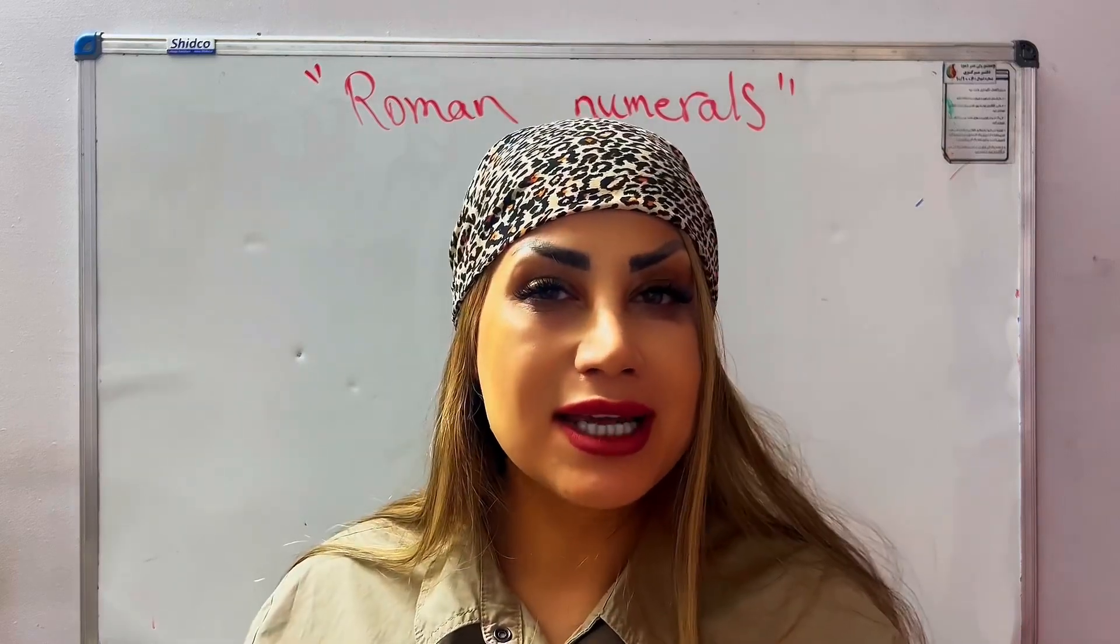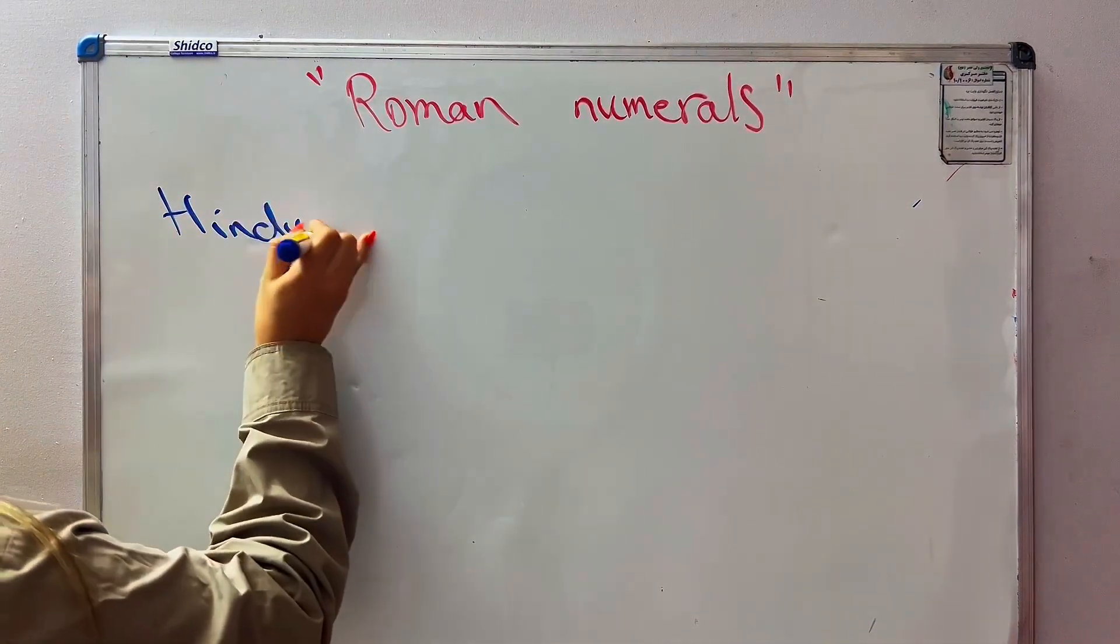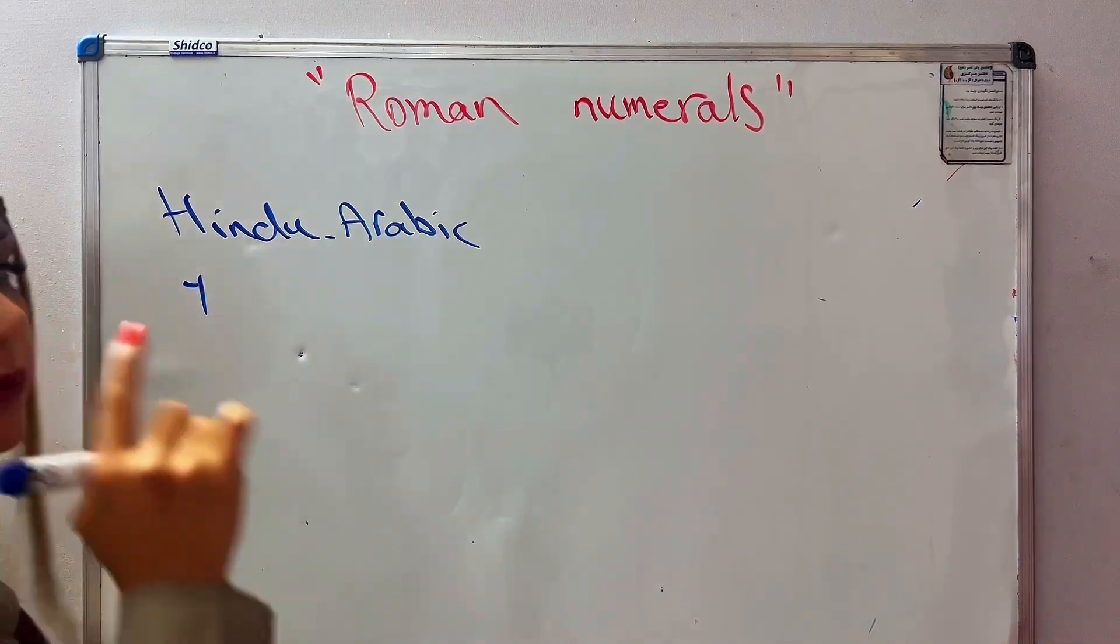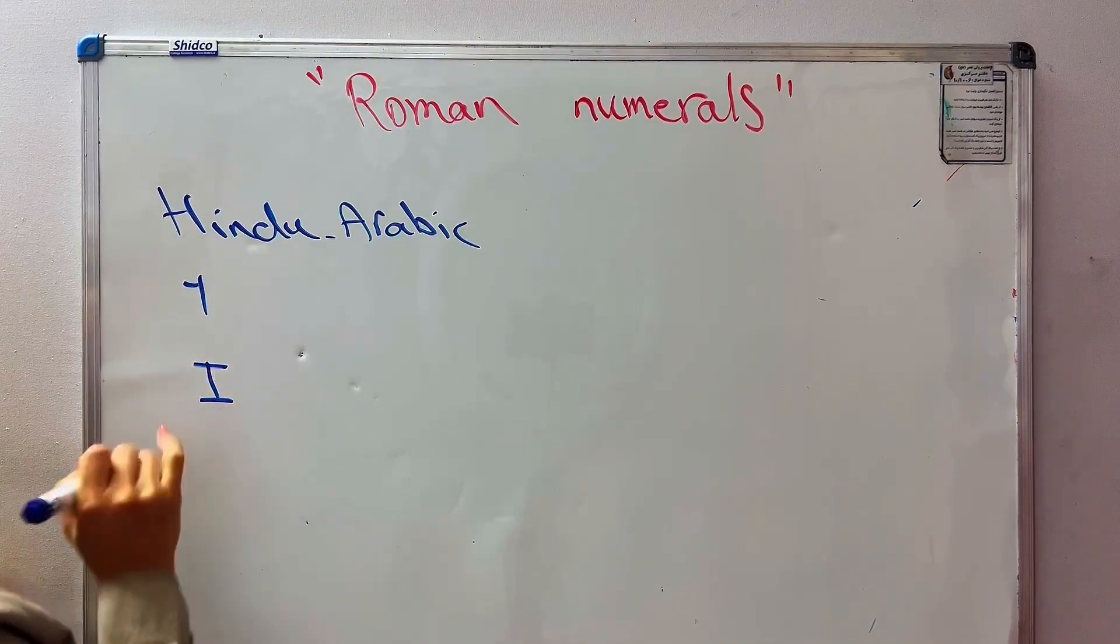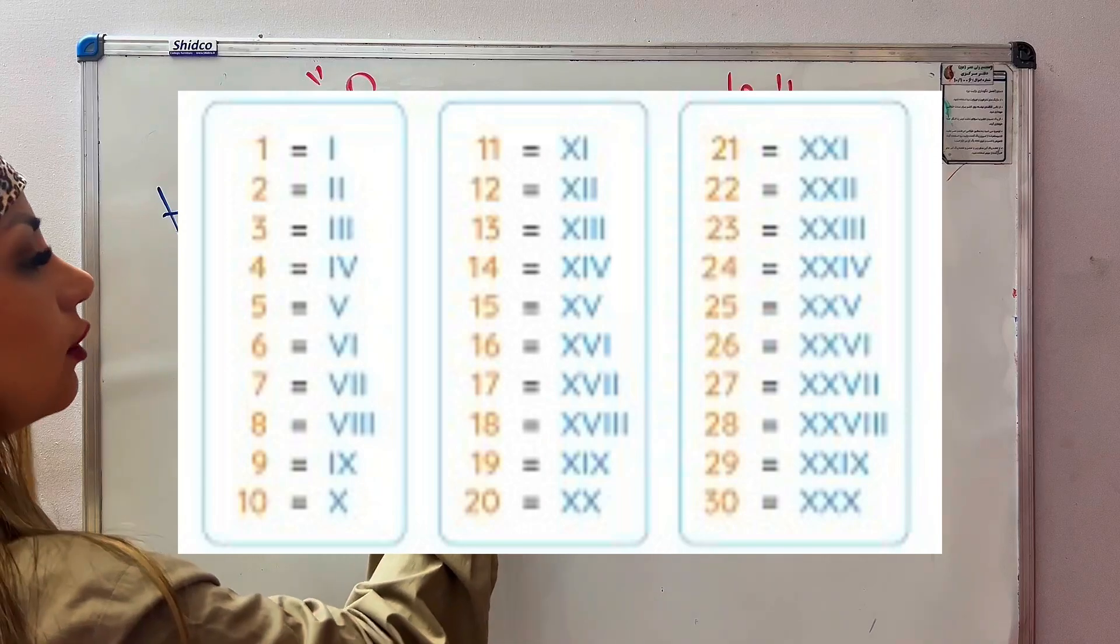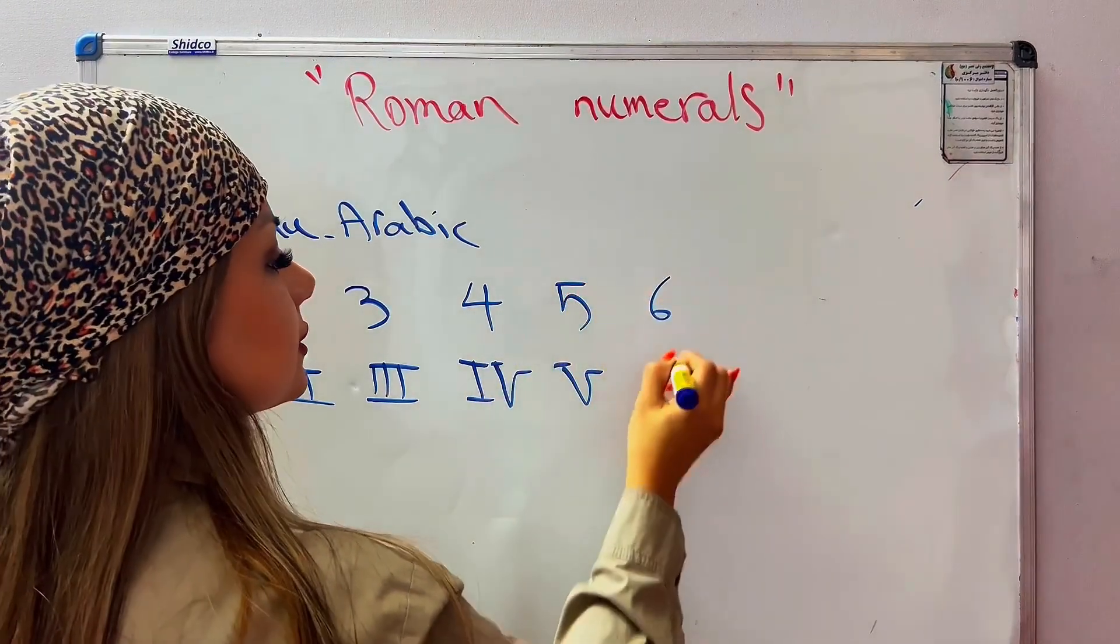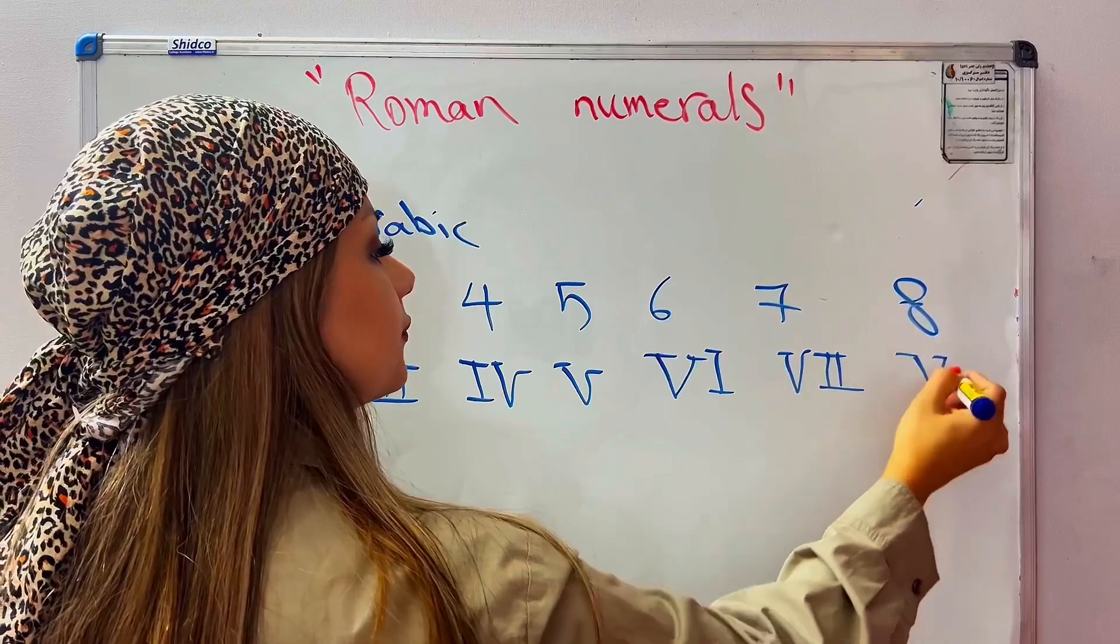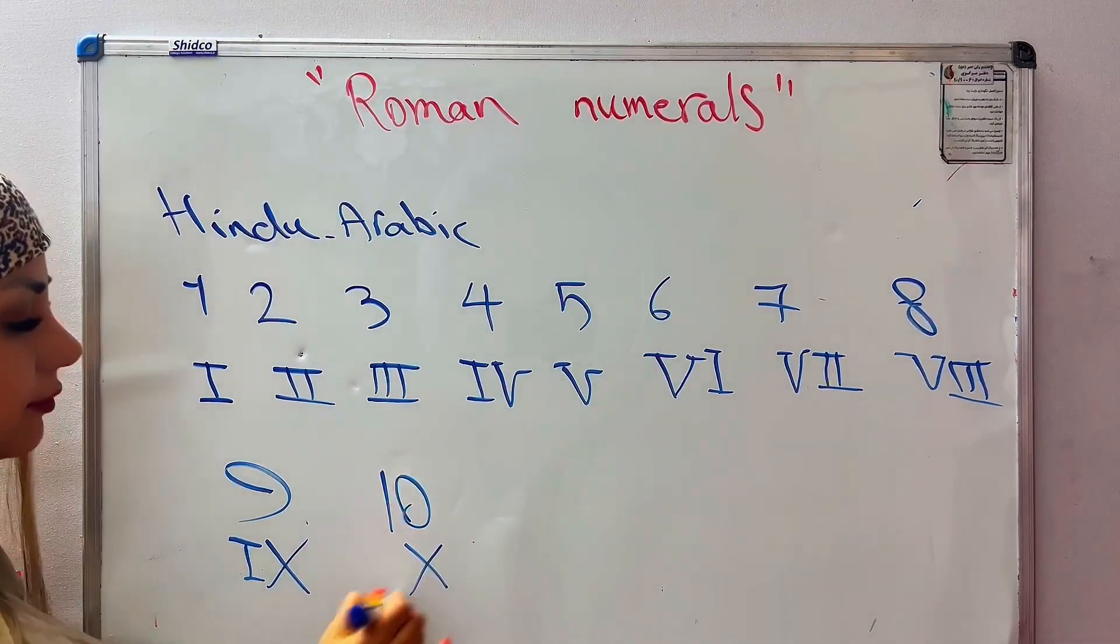We're going to learn how to read numbers like the ancient Romans. Let's go! Roman numerals are related to numbers like this: when we read in the Roman numeral system, we use this symbol for one, this symbol for two, three, four, five, six, seven, eight, nine, and ten.